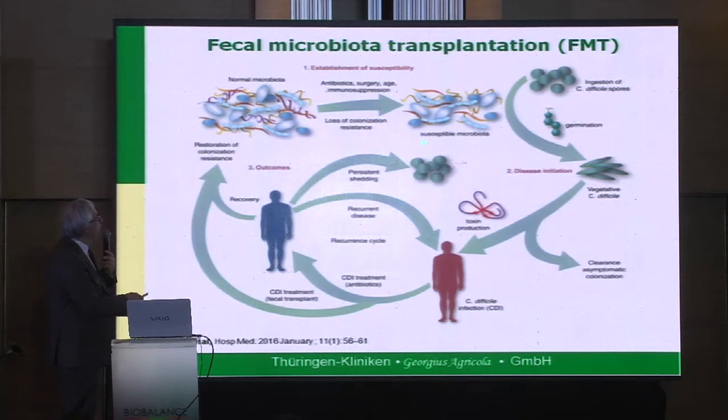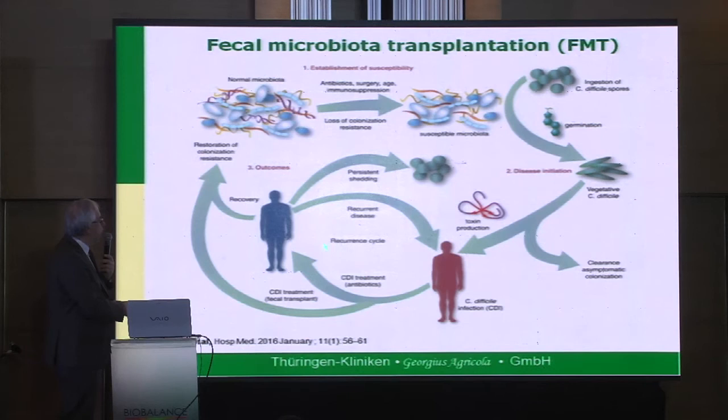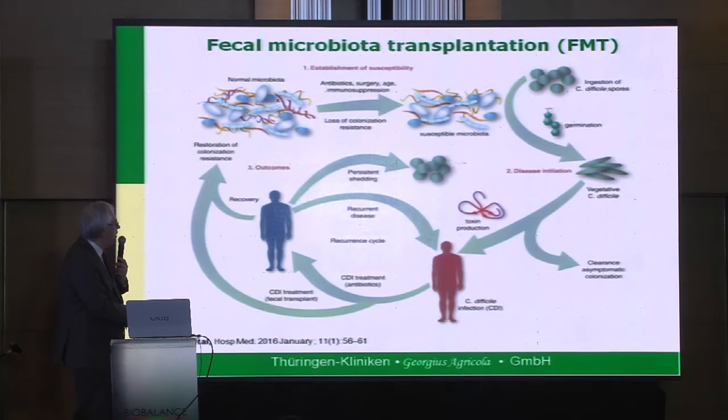After antibiotic treatment, we have susceptible microbiota, leading to germination of Clostridium difficile and outbreak of disease. The Clostridium difficile produces a toxin leading to infection and colitis. We can treat it with antibiotics, but with each cycle — disease, recurrence, disease, recurrence — it's like a vicious circle. The patient is getting more and more problems with this disease and we cannot treat it anymore.